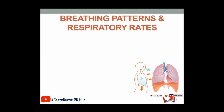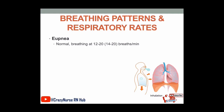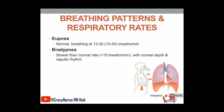Let's proceed to the different breathing patterns and respiratory rates. We have eupnea, which is normal breathing at a rate of 12 to 20 breaths per minute. We also have bradypnea, which is slower than normal — less than 10 breaths per minute with normal depth and rhythm. We also have tachypnea, which is rapid, shallow breathing, more than 24 breaths per minute.